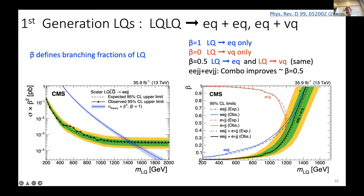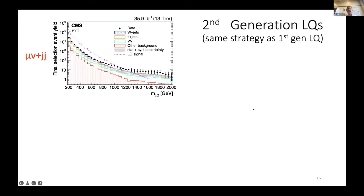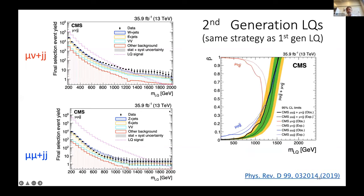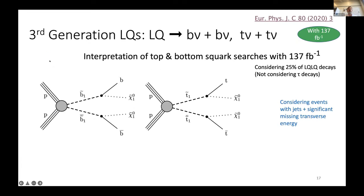When adding these channels together, we get improved limits, especially in intermediate values of the branching ratio where the leptoquark could decay into either electrons or neutrinos. We do something similar — which I won't go into detail — for second-generation leptoquarks with muon plus jet. Now I want to go into third-generation leptoquarks.